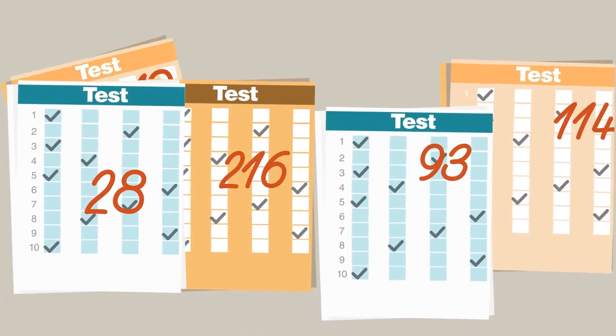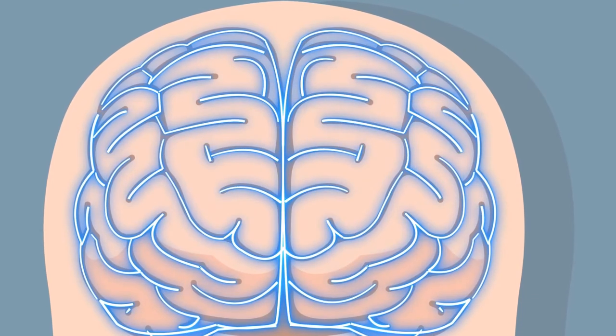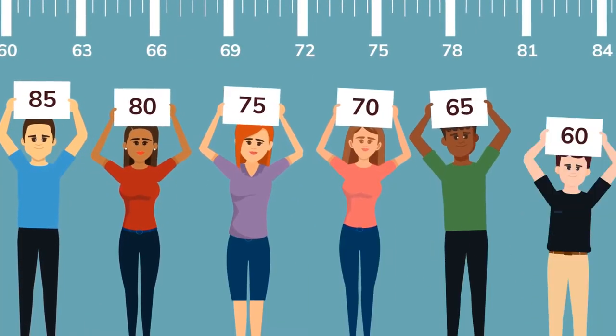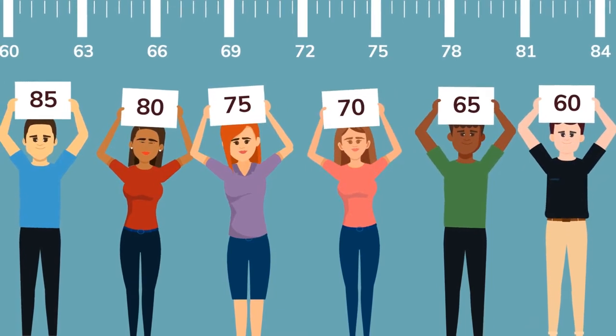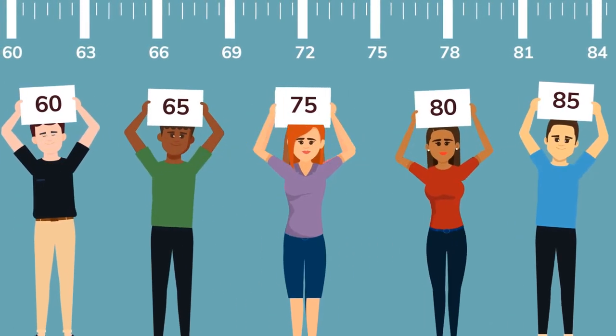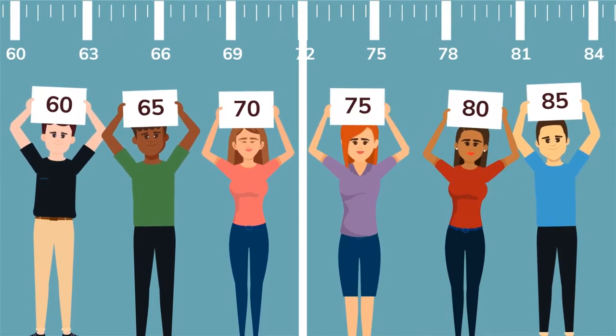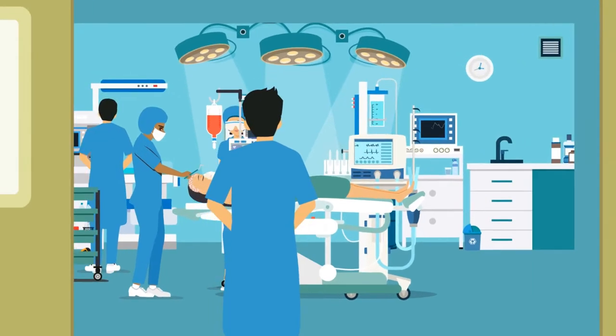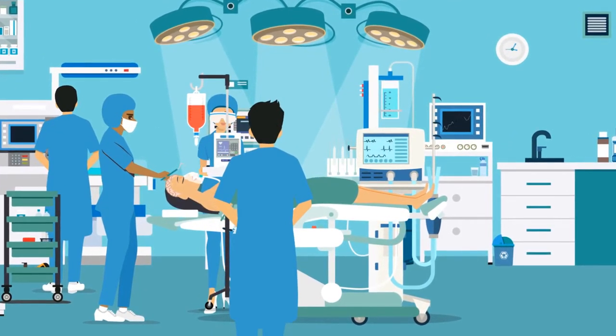Likewise, test scores are numbers we get from tests, and they help us to understand rather complex phenomena. For example, we can compare test takers' performance with each other in an objective way, and we can see whether a test taker has met certain standards, such as scoring above the benchmark number that represents the minimal skills to be a brain surgeon.